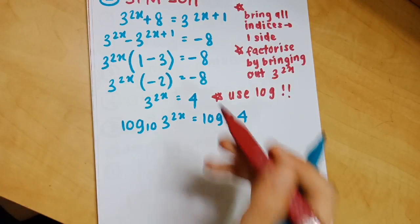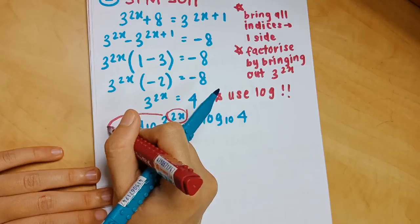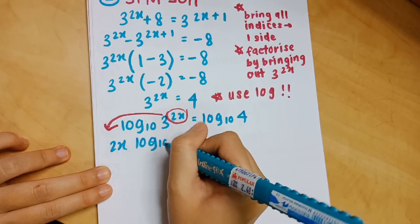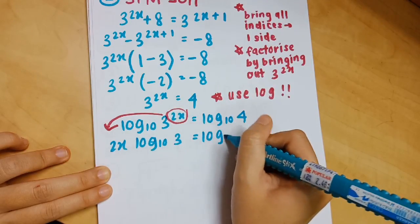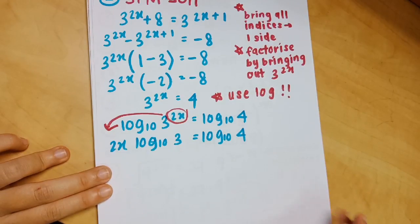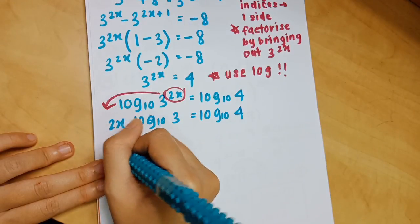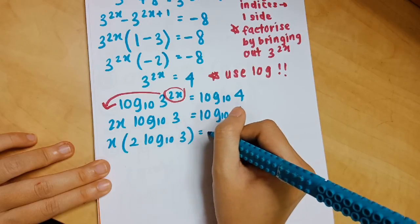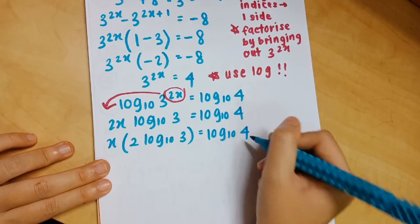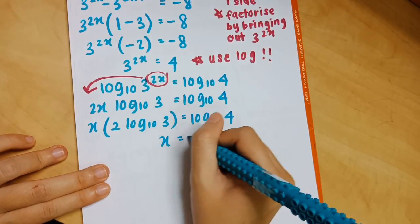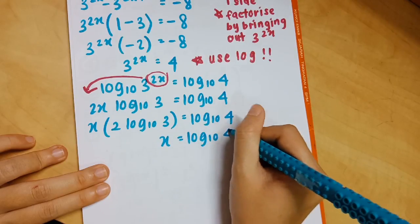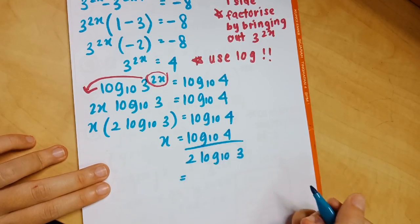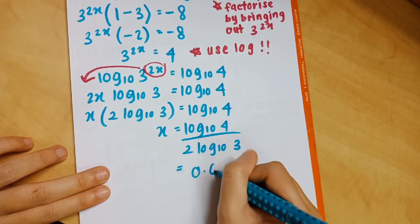Applying the logarithm power law, bring 2x to the front: 2x · log₁₀(3) = log₁₀(4). Everything is in base 10 because that is the base used in the calculator, so you get exact values. Isolate x by dividing log₁₀(4) by 2·log₁₀(3), and your final answer to 4 decimal places is x = 0.6309.